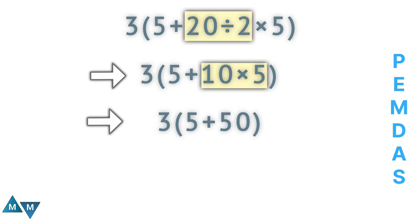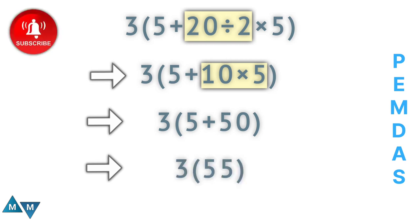Again, we're still working inside the parentheses. So we have 5 plus 50, which equals 55. Now finally, we're done with everything to do with inside the parentheses.